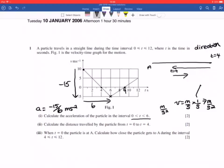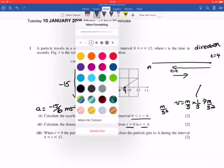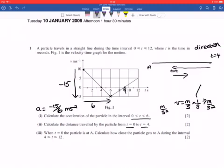Part b, calculate the distance travelled by the particle from t equals 0 to t equals 4. So up to this point here, and that's when it changes direction. Again, thinking about what we've got, if you've forgotten which way round it is, if you just think about your units, I want obviously metres. If I've got metres per second, if I multiply it by the seconds, the times, I just get my metres. So it must be the area.